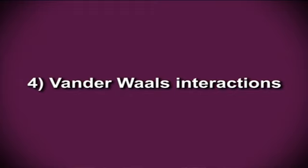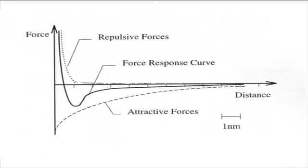Van der Waals interactions occur only when two atoms come very close together. The closeness of two molecules can induce charge fluctuations, which may produce dipoles and mutual attraction at very short range.